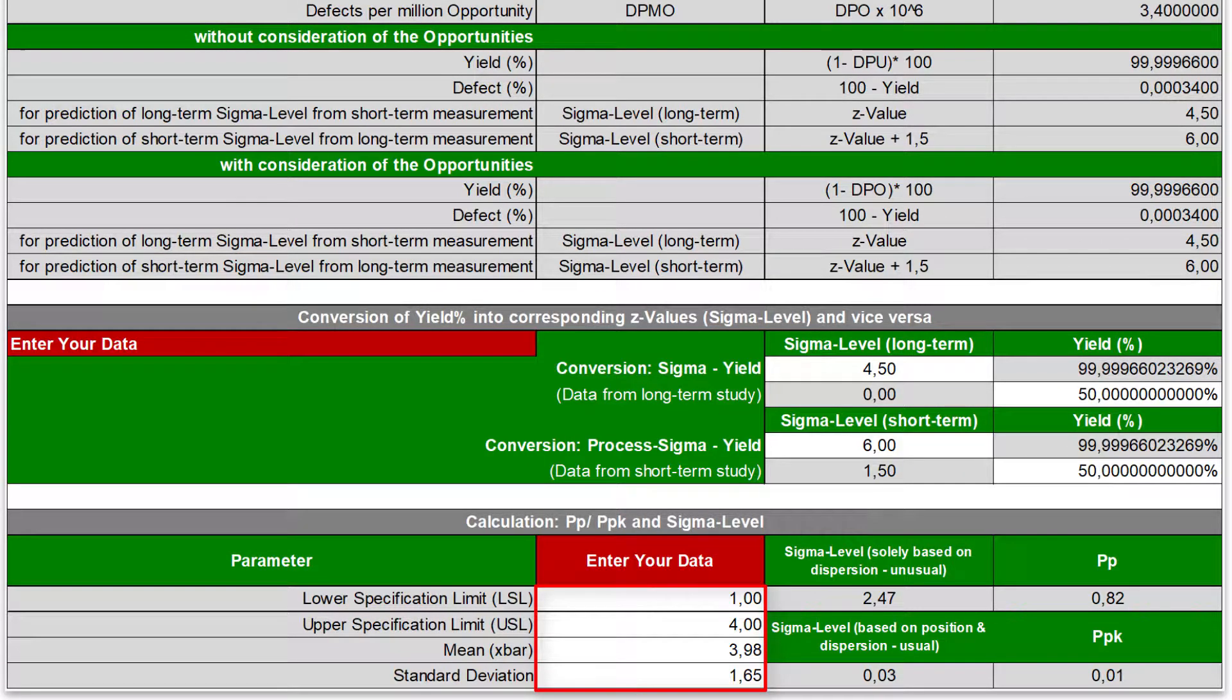I enter the data of our chocolate cookies here. The lower specification limit LSL equals 1, which also represents one boundary of our rating scale, and USL equals 4. As determined in the data collection plan, I enter the calculated mean and the standard deviation, and get an estimation of PPK 0.01 and the corresponding sigma level of 0.03.